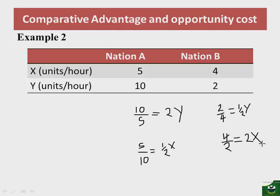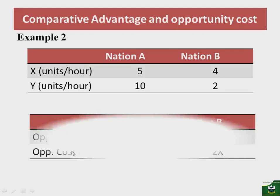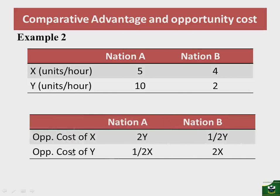Putting this information into a table: the opportunity cost of X in nation A is 2Y and in nation B is 1/2 Y. The opportunity cost of Y in nation A is 1/2 X and in nation B is 2X.